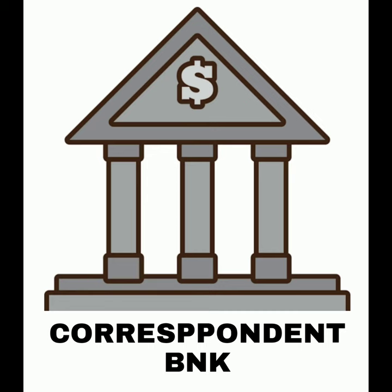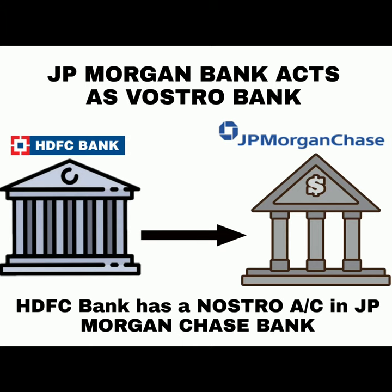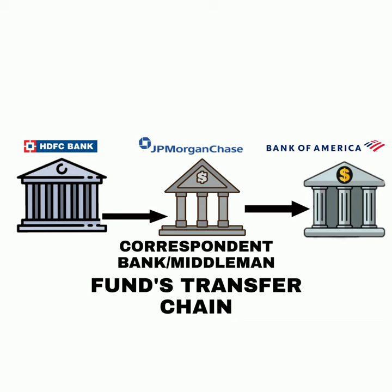Here, JPMorgan Chase Bank acts as a correspondent bank. In this situation, HDFC Bank has a Nostro account. Nostro simply means 'our account on your books,' or a bank that holds a foreign currency account in another bank. And JPMorgan Chase Bank is Vostro, which means 'your account on our books.'